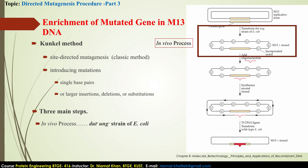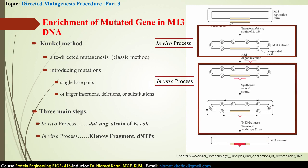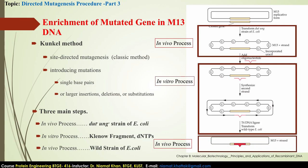In the first step we use a special type of nucleotide. The mutant DNA is amplified by a special type of enzyme known as Klenow fragment. Then this DNA is transferred into a wild-type strain for further amplification and expression. In today's class we will discuss these three steps in a little bit more detail.